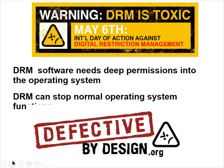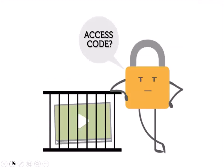DRM software needs deep permissions into the operating system and it can stop normal operating system functions — it is defective by design. Access codes are used by commercial content providers and students have to pay large sums in order to access digital textbooks and the exercises that go along with them.